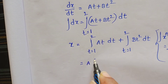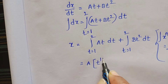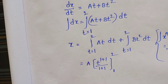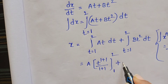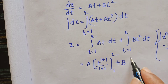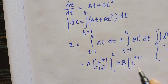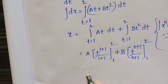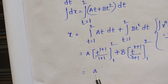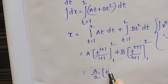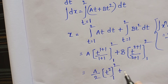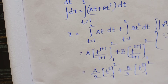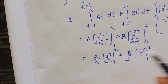So we get: a times t to the power (1+1) divided by (1+1), with limits from 1 to 2, plus b times t to the power (2+1) divided by (2+1), with limits from 1 to 2. This simplifies to (a/2) t squared from 1 to 2, plus (b/3) t cubed from 1 to 2.